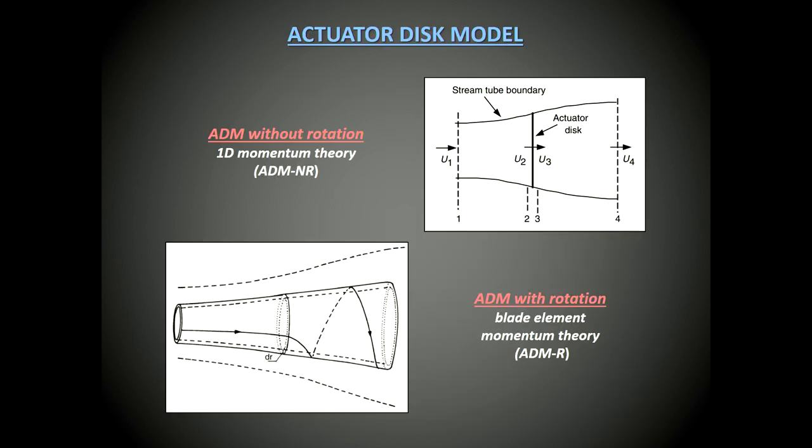There are two versions of the actuator disk model: without rotation and with rotation. The simpler one is the actuator disk model without rotation, based on the one-dimensional momentum theory, for which the rotor is represented by a uniform actuator disc which creates a jump of pressure in the stream that flows through it. Normal forces are applied uniformly over the disc.